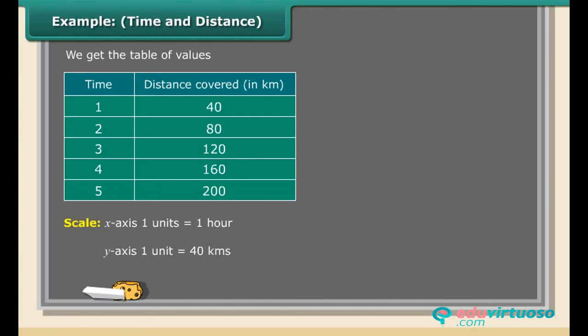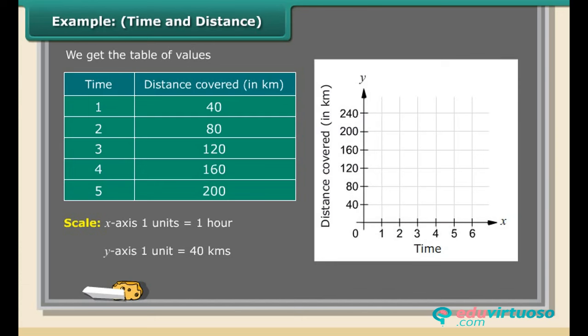We get the table of values. Scale: X-axis 1 unit is equal to 1 hour. Y-axis 1 unit is equal to 40 kilometers. A. Mark time on horizontal axis. B. Mark distance on vertical axis. C. Plot the points: (1, 40), (2, 80), (3, 120), (4, 160), (5, 200). D. Join the points. We get a linear graph.